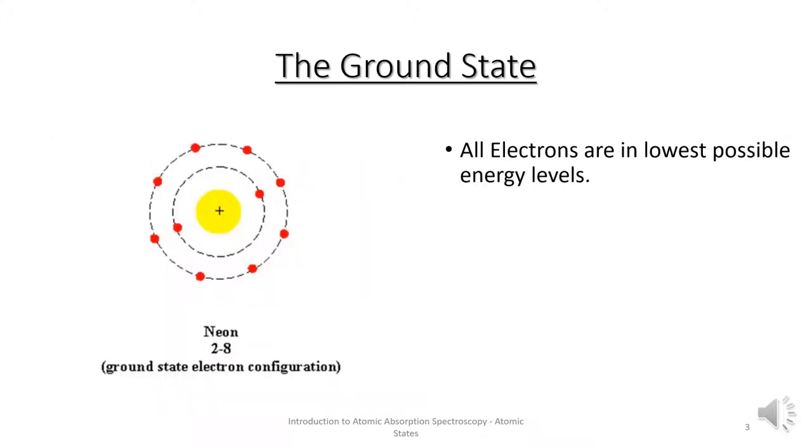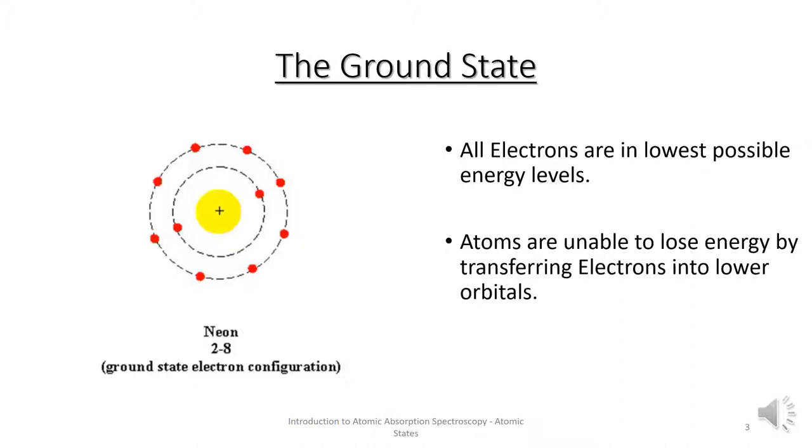Atoms in the ground state have all their electrons in the lowest possible energy levels. They are unable to lose energy by transferring electrons into lower orbitals.